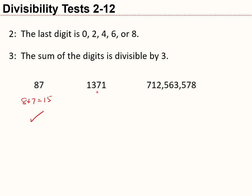How about 1,371? When I add the digits — 1 plus 3 plus 7 plus 1 — I get 12. And 12 is divisible by 3. So yes, 1,371 is divisible by 3.